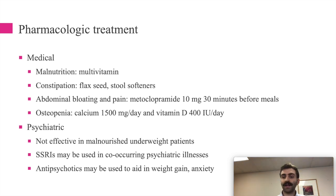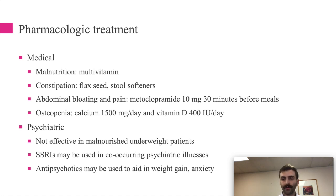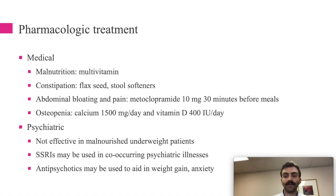If someone hasn't been eating for a long period, they haven't produced the same amounts of serotonin, norepinephrine, and dopamine as people without an eating disorder. Giving an SSRI, SNRI, or TCA won't work because the building-block neurotransmitters aren't there. The first goal is nutritional rehabilitation and therapy to restore some weight and caloric intake. SSRIs can be used for co-occurring psychiatric illnesses like depression or anxiety, but only after some weight restoration.